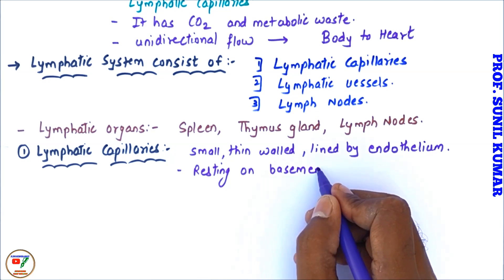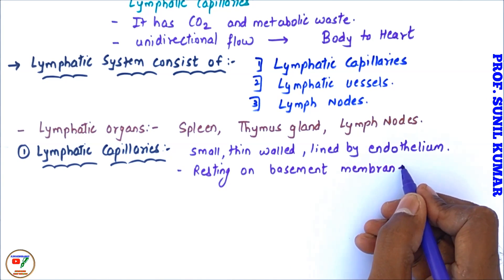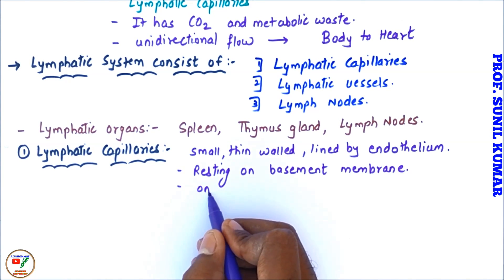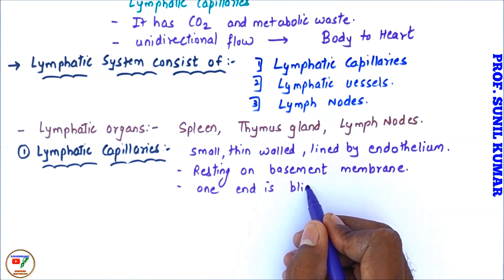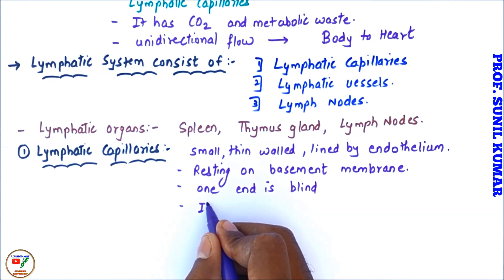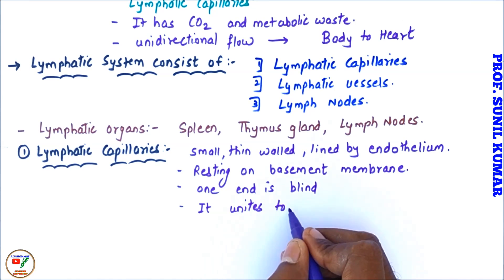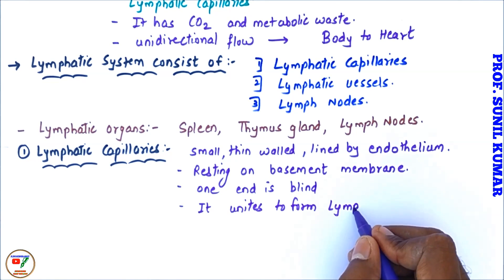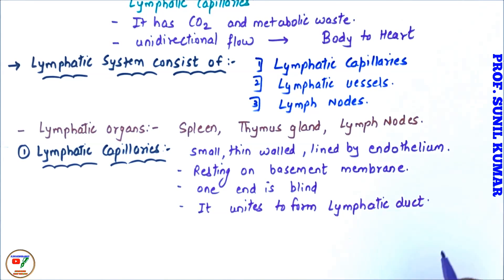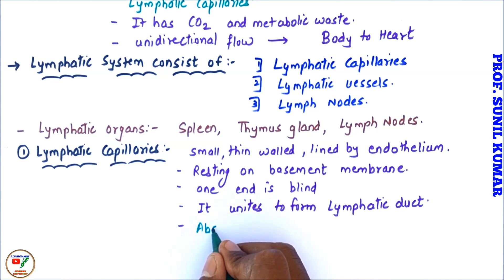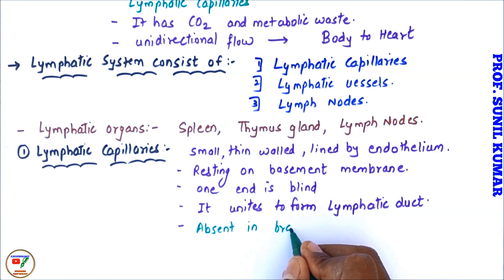We say that they are small, thin-walled and the lymphatic capillaries are lined by endothelium. It is resting on the basement membrane. We can say one end is blind, it means it opens at only one end. All lymphatic capillaries, they unite together and they form a duct and the duct is called lymphatic duct.